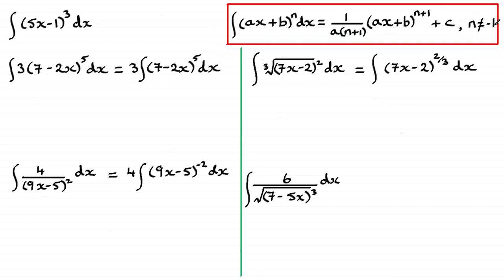You'll also notice I've written that n is not equal to minus 1. There is an exception to this rule. If I had ax plus b to the power minus 1 — in other words, 1 over ax plus b — and used this formula with n equal to minus 1, I'd get n plus 1 equal to 0, giving 1 divided by 0, which is undefined. So that's a special case we'll look at later.